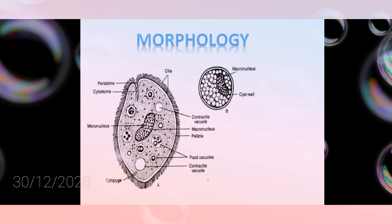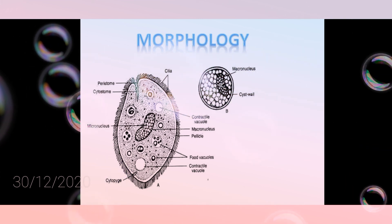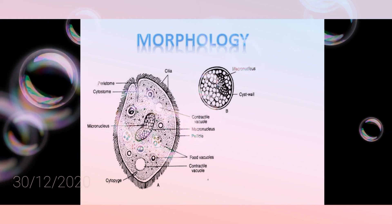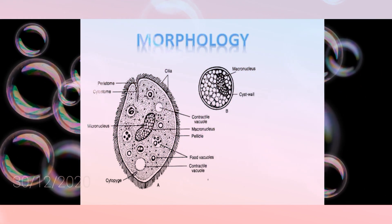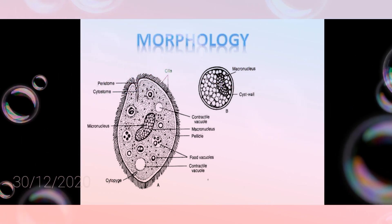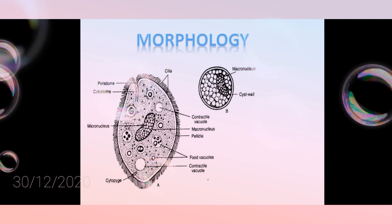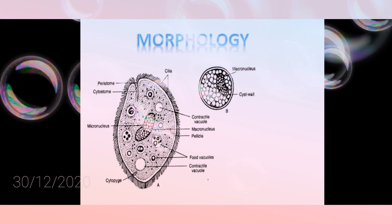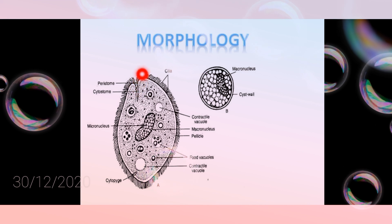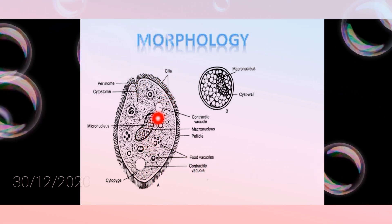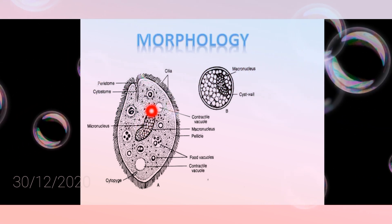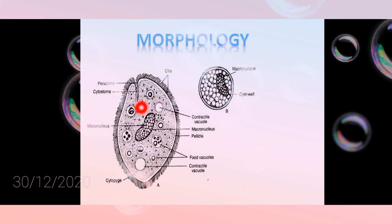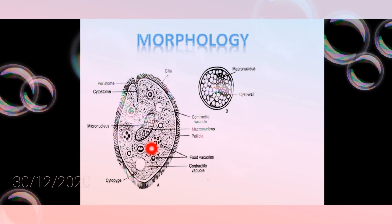In its morphology, it has a large trophozoite stage and an encysted stage where it forms the cyst wall. The body is oval with cilia present all over the body, and there are large cilia near the mouth or cytostome. There is a cytostome, a cytopyge, one micronucleus, one macronucleus, contractile vacuoles, and food vacuoles. This structure shows the cyst.